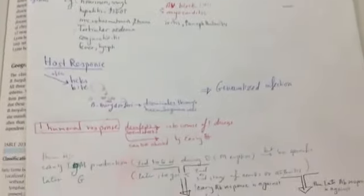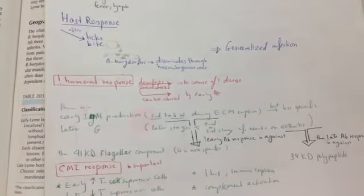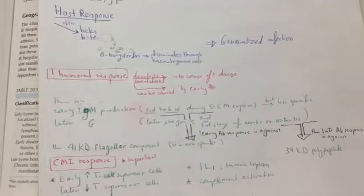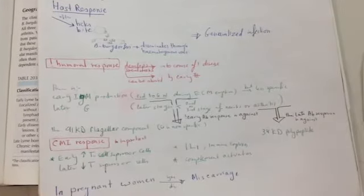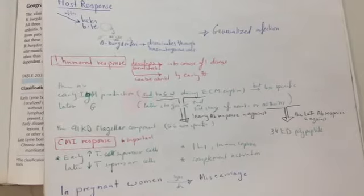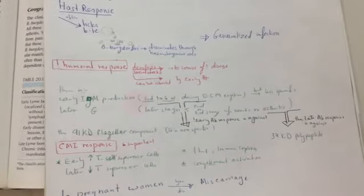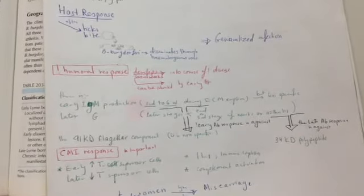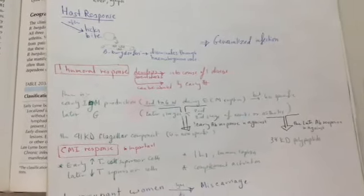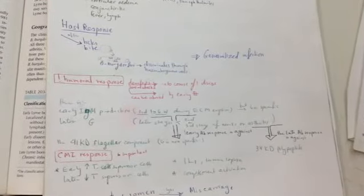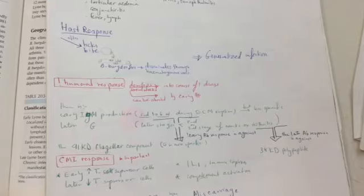Here we can say the host response. The host response after the tick bite: Borrelia burgdorferi is disseminated through the hematogenous route, leading to generalized infection. The humoral response develop several weeks into the course of the disease and can be aborted by early treatment. There is early immunoglobulin M production, third to six weeks during erythema chronica migrans eruption, but less specific. Later, there's immunoglobulin G production in later stages, second or third stage, second or third stage of neurones and arthritis.